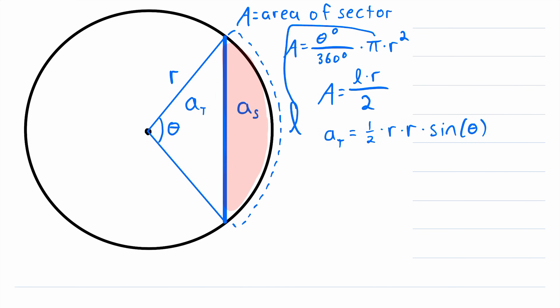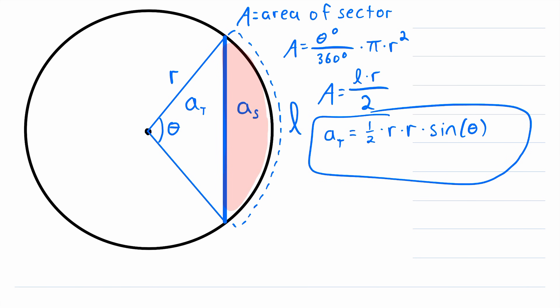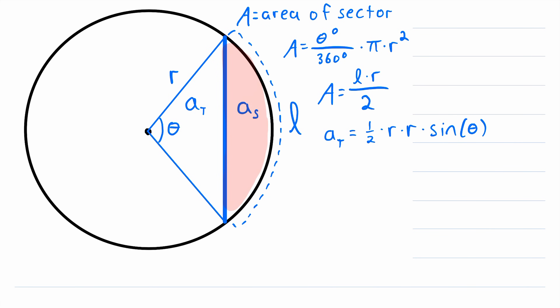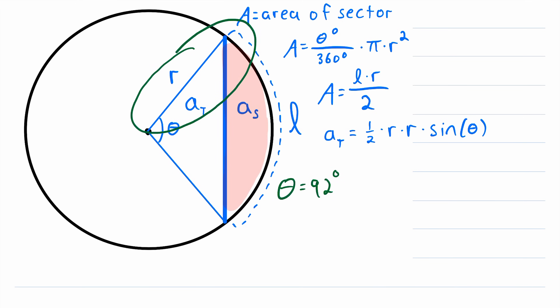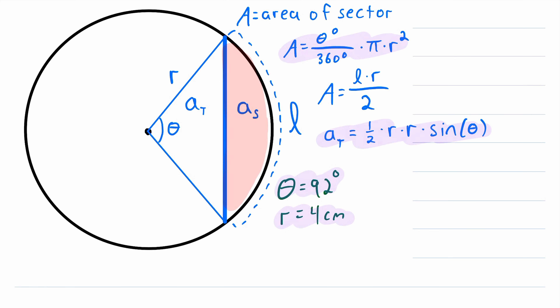So all we have to do is use one of the two sector formulas to find the area of the sector, then use this formula to find the area of the triangle, and subtract to get the area of the segment. Let's get some numbers and do an example. Let's say theta, the central angle, is equal to 92 degrees, and the radius length r is equal to 4 centimeters. The central angle measure and the radius are all we need.